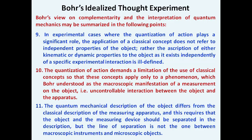The ninth point: the quantum mechanical description of the object differs from the classical description of the measuring apparatus, and this requires that the object and measuring device be separated in description. However, the line of separation is not the one between the macroscopic instrument and the microscopic object. Whenever working with quantum mechanical description, the object must be distinguished from the classical description of the measuring apparatus, and that separation should not be equated with the macroscopic-to-microscopic boundary.